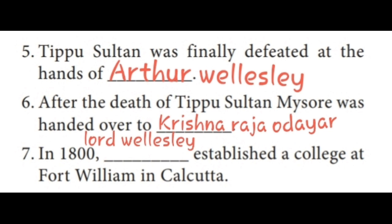Fifth one: Tipu Sultan was finally defeated at the hands of Arthur Wellesley. Sixth one: after the death of Tipu Sultan, Mysore was handed over to Krishna Raja Odaiyar. Seventh one: in 1800, Lord Wellesley established a college at Fort William in Calcutta.